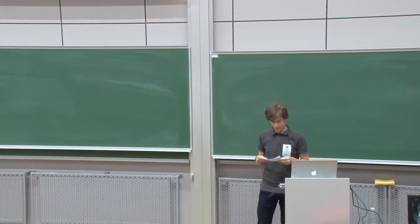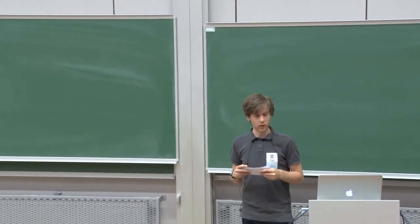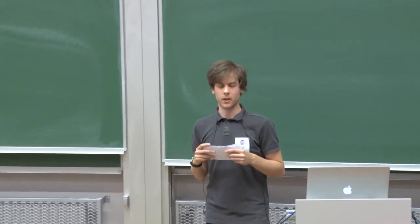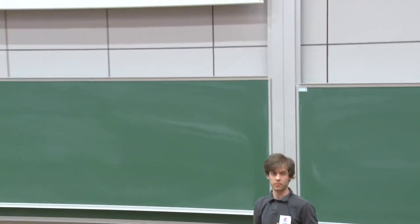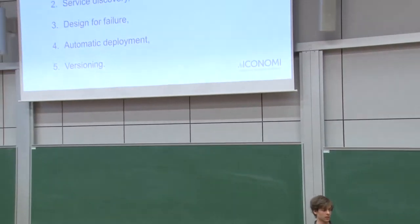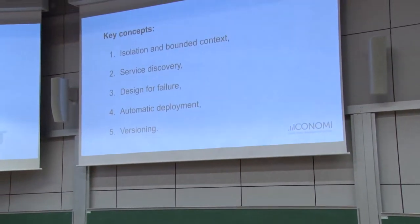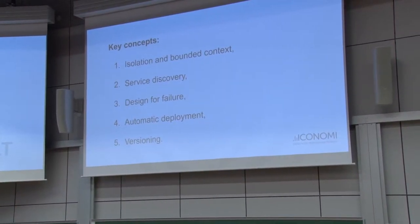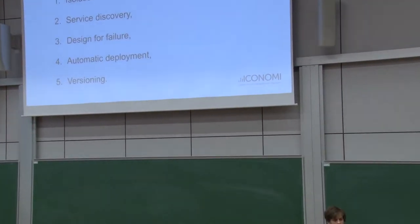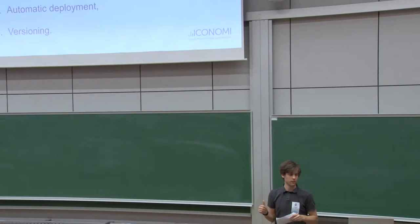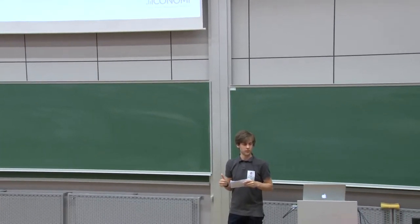And to do these things right, and to achieve agility and scalability, we have to follow the following five key concepts. These are isolation and handling the bounded contexts correctly. Then we have service discovery. And we have to design for failure. We need automatic deployment. And we need to do the versioning of services strictly.